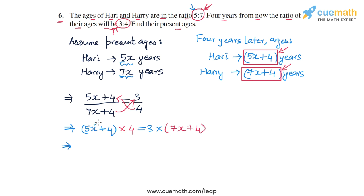So we have 5x into 4, that's 20x and then we have 4 into 4, that's 16, so 20x plus 16. On the right side we have 3 into 7x, so that's 21x and then we have 3 into 4, so that's 12.